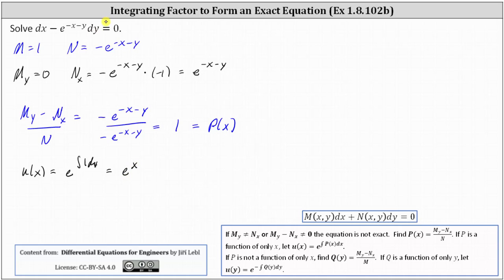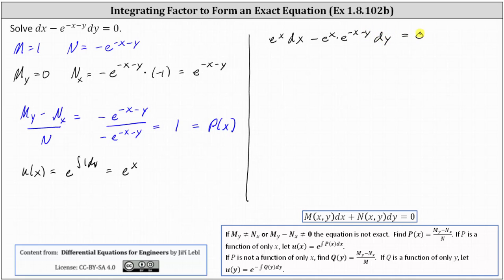So now we go back to the original equation and multiply both sides by e to the x. This gives us e to the x dx minus e to the x times e to the power of negative x minus y dy equals zero. Simplifying: we have e to the x dx, and then multiplying the bases we add the exponents — x plus negative x minus y equals negative y — giving us minus e to the negative y dy equals zero.